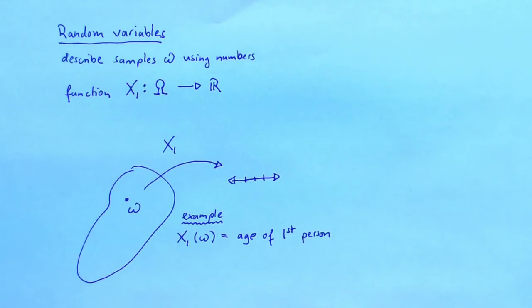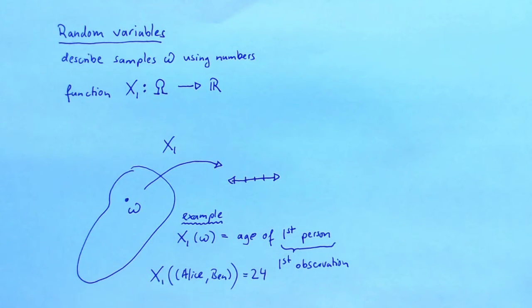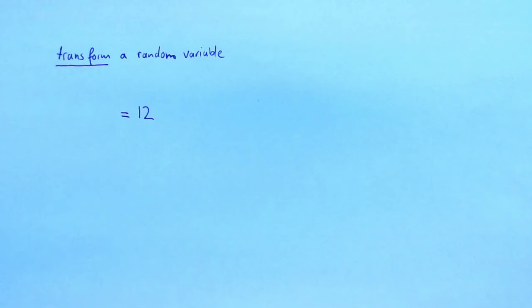X1 assigns for every sample Omega in our sample space a number. For example, X1 could give the age of the first person that we sampled — the first person sampled is called the first observation. Let's evaluate X1 on the sample Alice Ben. If Alice is 24 years old, then X1 evaluated on Alice Ben will be 24. A nice property of random variables is that you can define a new random variable by transforming an existing one. If X1 gives us the age of the first observation, we can define a new random variable by taking 12 times X1, which gives us the age of the first observation in months rather than in years.